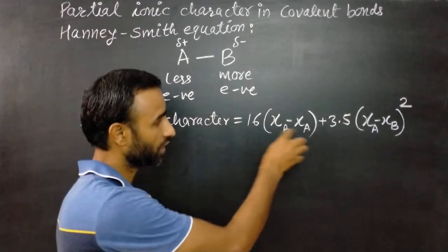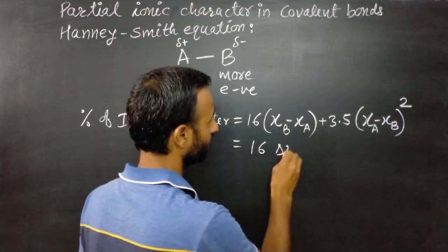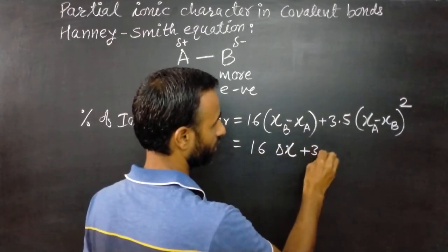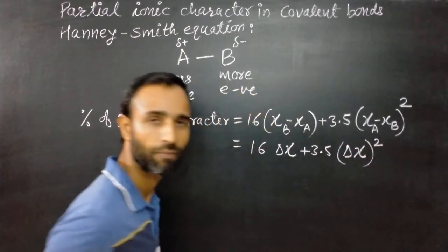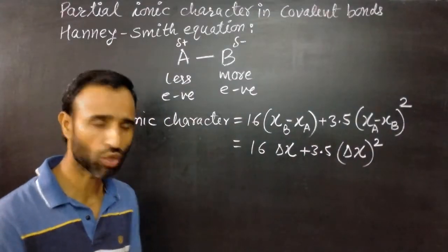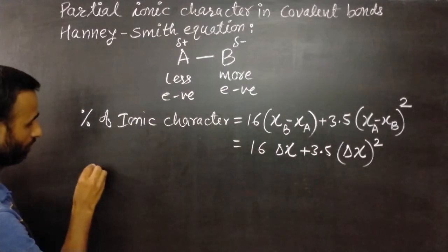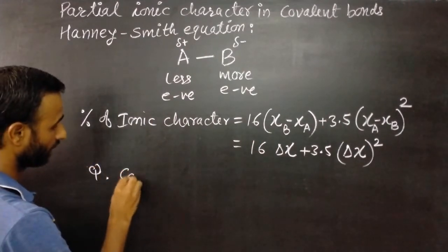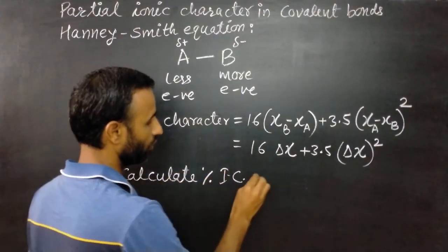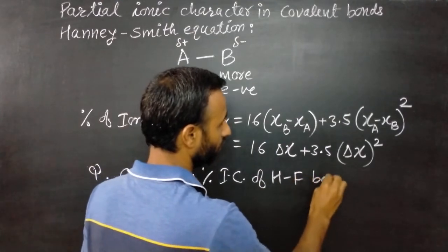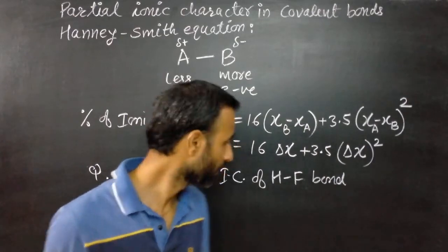Let us calculate percentage of ionic character of HF bond. Let us have a question such that calculate percentage of ionic character of HF bond. These electronegativities are in Pauling scale.